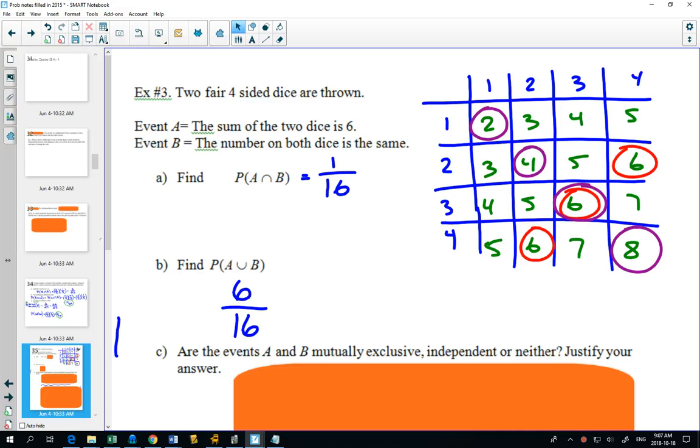Find the probability of A or B. Well, in A or B, we count up all of the events that are either the sum is a six or that the two dice are the same. Now, the sum that it's a six happens three times. The probability of the dice are the same happens four times. Why is it six out of 16 and not seven out of 16? That's right. We double counted that six. If we count the purple separately, there's four purples. The red separately, there's three reds. But we double counted one.